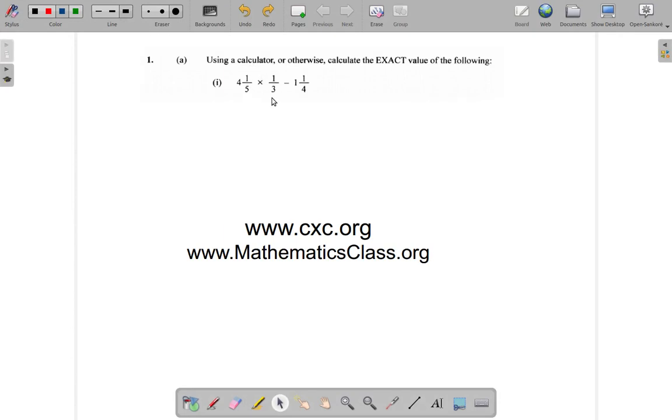Alright. 4 and 1 fifth times 1 third minus 1 and a quarter. Okay, so, just before I delete this, remember, you have two, at least two ORGs to visit. There's your CXC.org. That's the official CXC website.